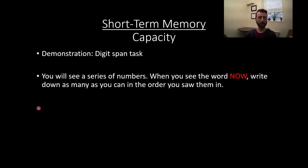To demonstrate this, we're going to do what's called a digit span task. What I want you to do is pay attention to the series of numbers I'm going to present in just a moment. When you see the word now, write down as many as you can in the order that you saw them. So try to remember the sequence of numbers and the order that they are presented and report those when you're prompted to do so. We'll start here in just a sec. Here we go.